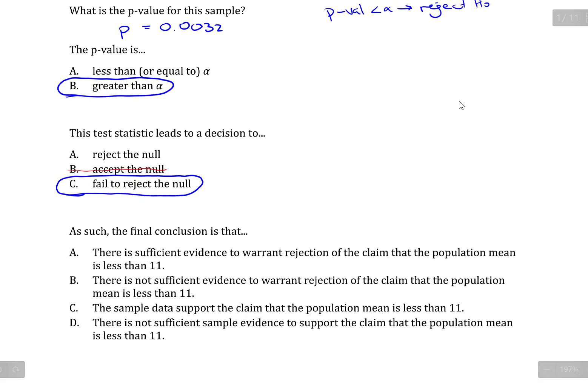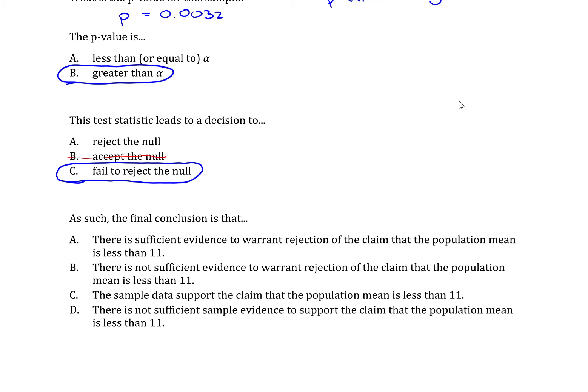And that brings us to our interpretation statement. As such, the final conclusion is that there is sufficient evidence to warrant rejection of the claim that the population mean is less than 11. And the rest of these are basically the same if you read through, but there's some key differences. One key difference is that they all either start with there is sufficient evidence or there is not sufficient evidence, except for this one, it doesn't have that at all. I think that they are implying that it's supposed to be sufficient, but they all basically start with that language.